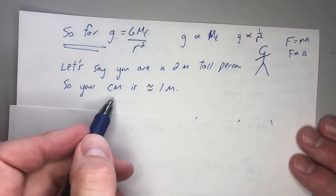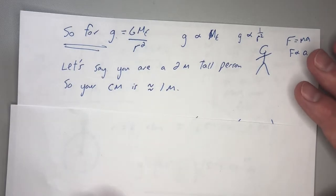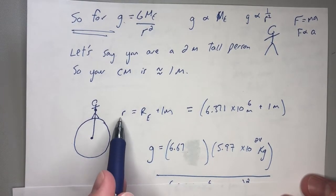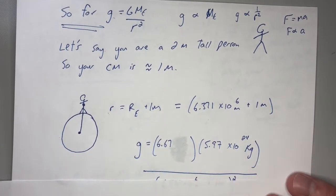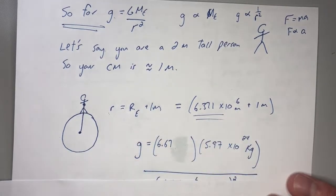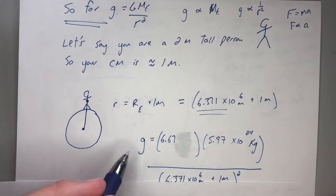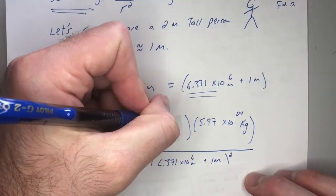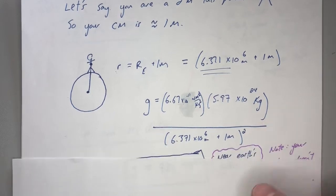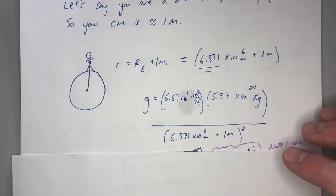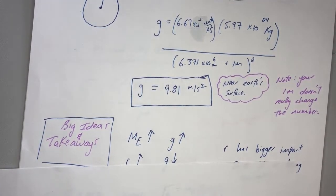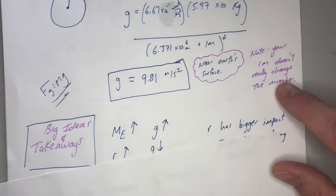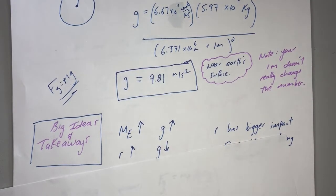Let's say you are a two-meter-tall person and your center of mass is about one meter. You draw a picture with you on Earth and the center of Earth below. Your r is the radius of the Earth plus your one meter. That extra meter is like a millionaire being given a dollar — pretty negligible. Using the formula: big G times mass of Earth divided by r squared — that's 6.67 times 10 to the negative 11th times 5.97 times 10 to the 24 kilograms, divided by the separation from Earth's center to your center. When you punch that through in your calculator, you get 9.81 meters per second squared. That's why FG equals mg near the surface of the Earth.